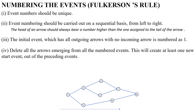Next rule is, delete all the arrows emerging from all the numbered events. This will create at least one new start event out of the preceding events. After entering the event numbers, remove the arrows for the corresponding event and the next events become the new start events.